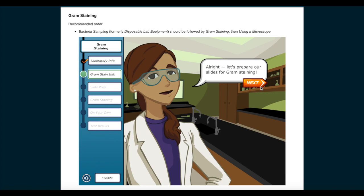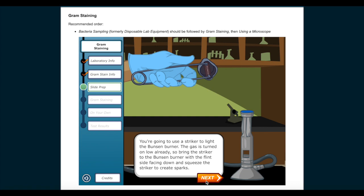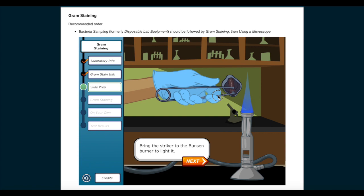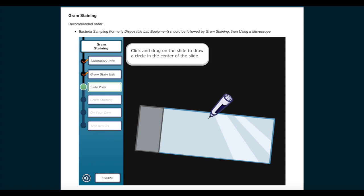We are going to Gram stain samples of the yogurt so we can see what kinds of bacteria are present. Alright, let's prepare our slides for Gram staining. To prevent bacteria from contaminating our work area, we have wiped down the table with a 70% ethanol solution. We will also light a Bunsen burner to sterilize the inoculating loops we'll use later and help maintain a sterile working environment. You're going to use a striker to light the Bunsen burner. The gas is turned on low already, so bring the striker to the Bunsen burner with the flint side facing down and squeeze the striker to create sparks. Bring the striker to the burner to light it. Draw a circle on the slide with a permanent marker. This indicates where the small sample of yogurt will be placed. Turn the slide over so the markings are on its underside. Click and drag on the slide to draw a circle in the center of the slide.